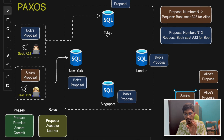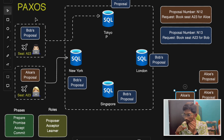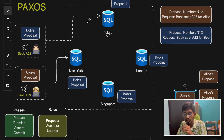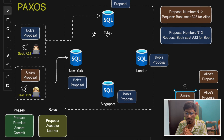Once every database node learns the final decision, they commit the request and the information is updated across the entire database cluster. This process keeps the system strongly consistent across global databases. Leader election is used in distributed databases, cloud services, and blockchain networks. Paxos is popularly used in Google Spanner — a distributed SQL database cluster — in the Google Ads ecosystem, as a foundation for AWS DynamoDB, and Apache ZooKeeper.